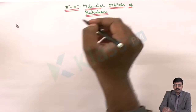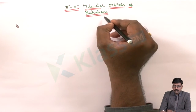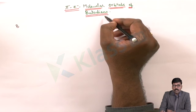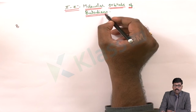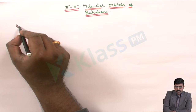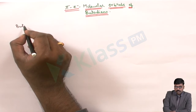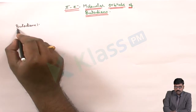Today we will see the pi electron molecular orbitals of butadiene. For diatomic molecules, we have written molecular orbital diagrams, and in the same way the pi electron clouds of butadiene and benzene can be drawn. Let's try to understand how the butadiene molecule is structured, and then we will go with the diagram.